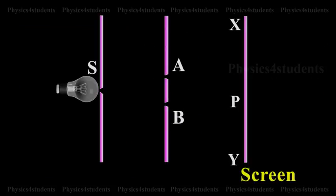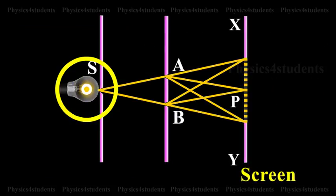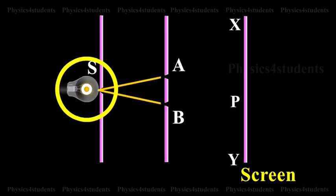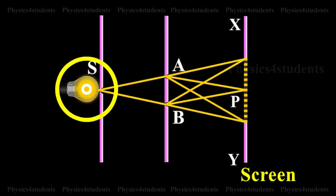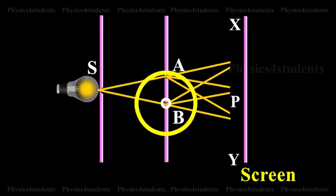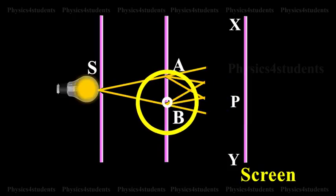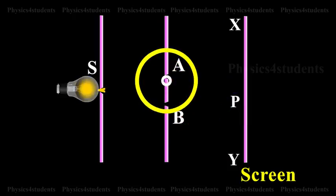The experimental setup is shown in the animation. Light from a narrow slit S, illuminated by a monochromatic source, is allowed to fall on two narrow slits A and B placed very close to each other. The width of each slit is about 0.03 mm and they are about 0.3 mm apart.